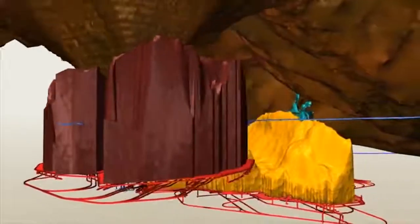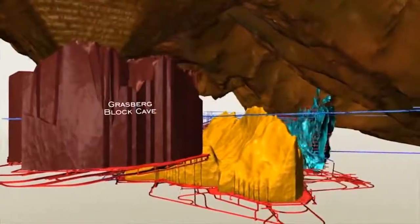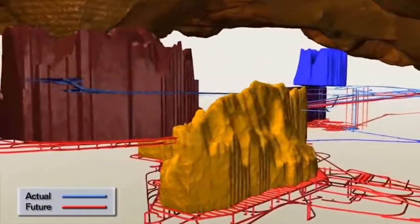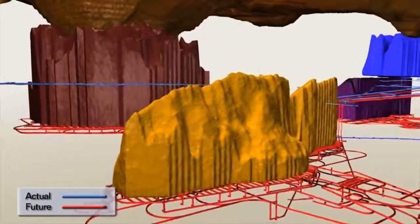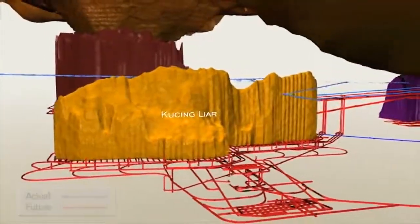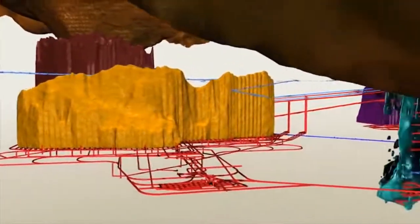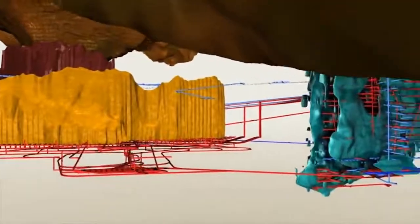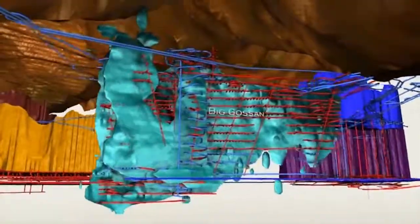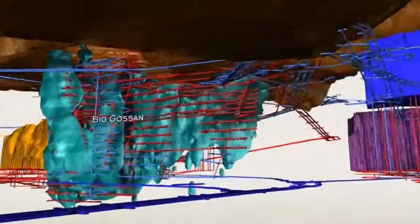Directly below the Grasberg open pit lies the Grasberg block cave mine in development. The lines you see here in red indicate future infrastructure. Many miles of tunnels and drifts. The blue ones are already in place and in use. The Kuching Liar deposit, slated for future underground production. And as we move eastward to one of the current underground mines, Big Gossin, which began production in 2010.